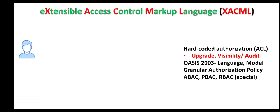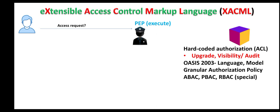So this user wants to access this resource. Here, the Policy Enforcement Point, which is a component of XACML, comes into action. This is the main executor of XACML. This access request of a user is intercepted by this Policy Enforcement Point.